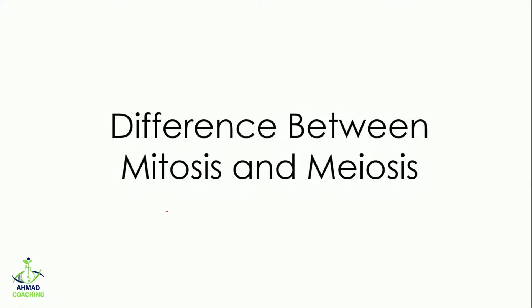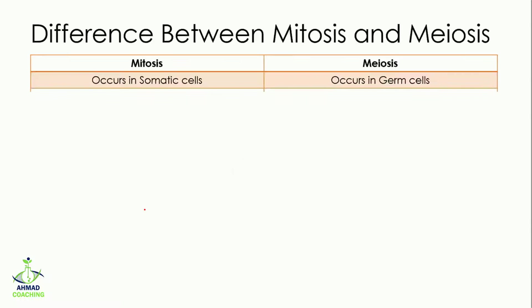Welcome to Amat Coaching. Today we will study the differences between mitosis and meiosis. The first difference is that mitosis occurs in the somatic cells.